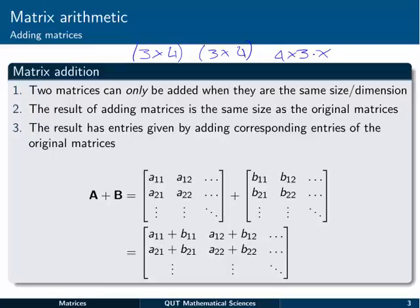So they have to have the same number of rows and the same number of columns. The result of adding the matrices is actually the same size as the ones you started with. The reason why all this works together is because of the way that we actually define the operation of addition. Essentially, the result has entries given by adding the corresponding entries of the original matrices.